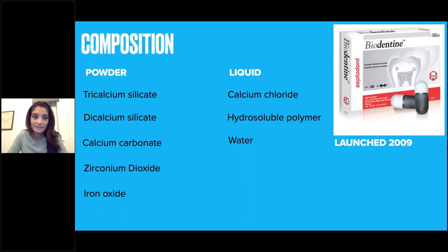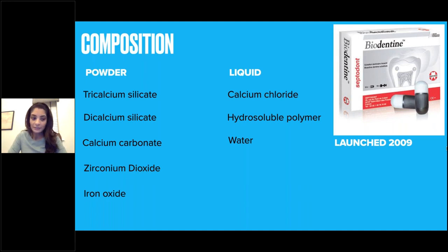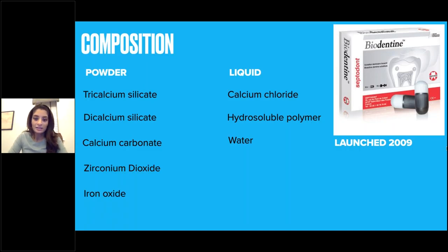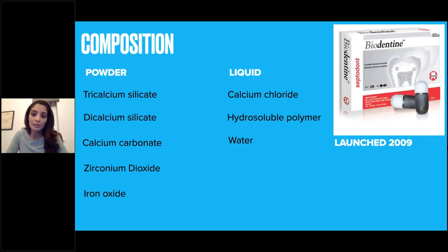The composition of Biodentine is based on a powder and a liquid. The powder contains tricalcium silicate as its main component, dicalcium silicate as the second main component, calcium carbonate as a filler, zirconium dioxide which makes the material radiopaque, and iron oxide responsible for the shade. The liquid contains calcium chloride as an accelerator — meaning the material sets much faster than other calcium silicate cements — a hydrosoluble polymer as a water-reducing agent responsible for consistency, and water.